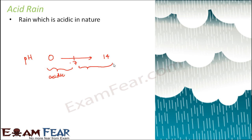Any value between 7 and 14 means the solution is basic. And if a solution has a pH value of exactly 7, that means the solution is neutral. This is how we identify whether a particular solution is acidic, neutral, or basic.